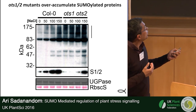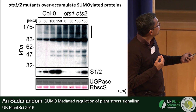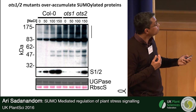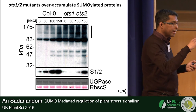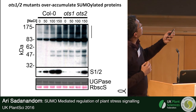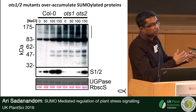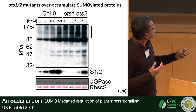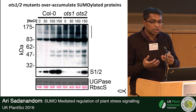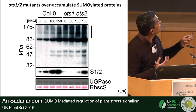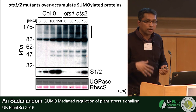This western blot was made with purified anti-SUMO1/2 antibodies. Without stress you don't see much sumoylation — this is a gradient gel and you can see the free SUMO protein going up as you increase the amount of salt. Looking at the whole gel, there's not much conjugation of SUMO onto target proteins normally. But as you increase the amount of salt you start seeing a smearing effect — the number of SUMO-conjugated proteins going up — and in the OTS double mutant you can see elevated SUMO conjugation even without stress.